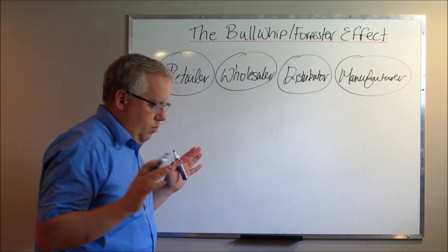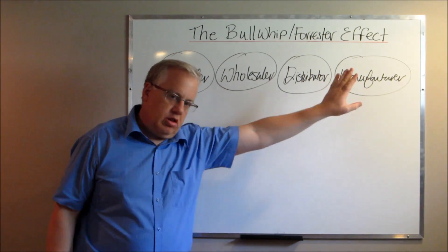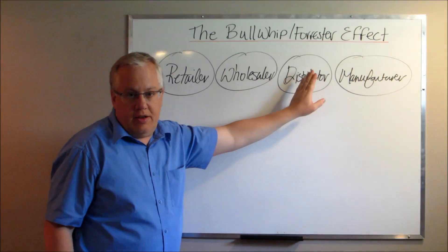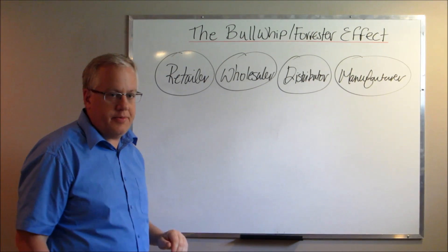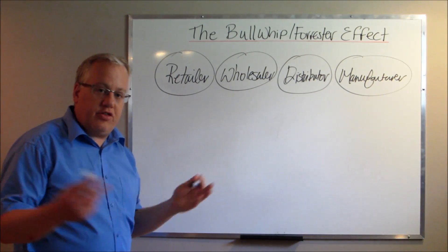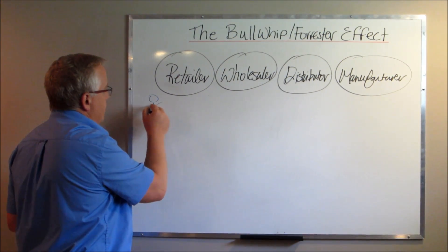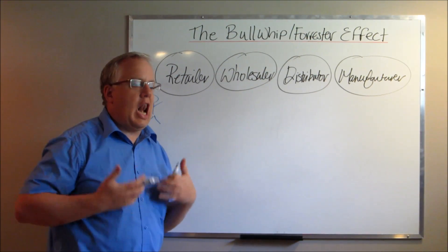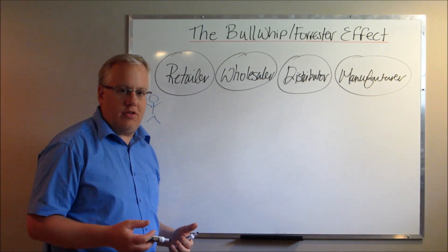Now essentially, what the bullwhip effect states is that every member of the supply chain relies upon the other. The manufacturer relies upon the feedback in terms of forecasts from the distributor. The distributor relies upon the wholesaler. The wholesaler relies upon the retailer. So essentially, one day you have this consumer or a series of consumers that come in, and they all of a sudden place this huge order. And they essentially liquidate, completely liquidate the retailer's inventory.